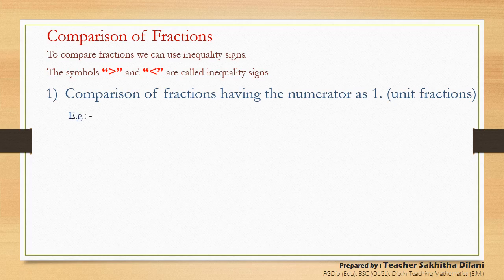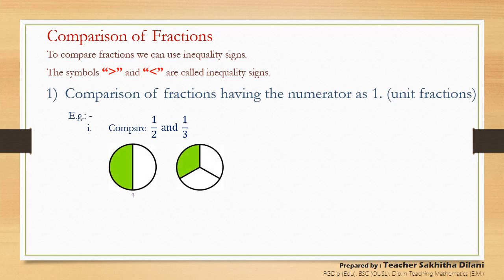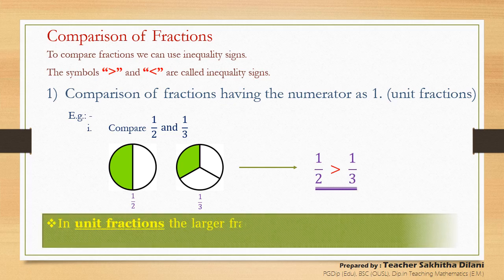Suppose that you are given to compare the unit fractions one-half and one-third. These two unit fractions can be represented using diagrams. You can see that the coloured portion in the first diagram is larger than the coloured portion in the second diagram. Therefore, one-half is the largest fraction out of these two. It can be written as: one-half is greater than one-third. Hence, we can conclude that in unit fractions, the larger fraction is the fraction with the smaller denominator.